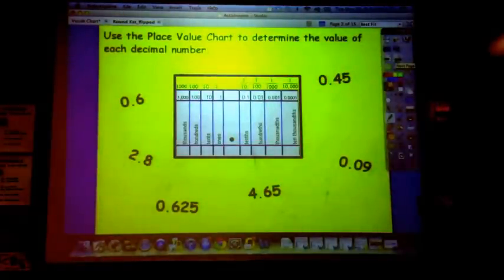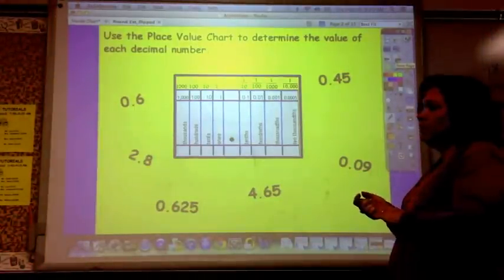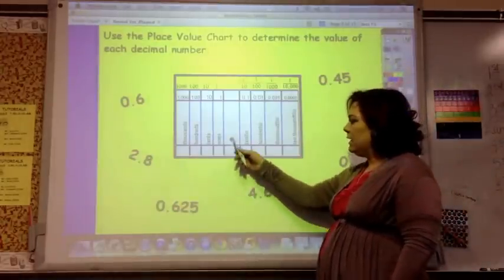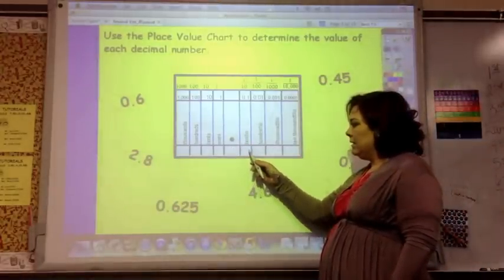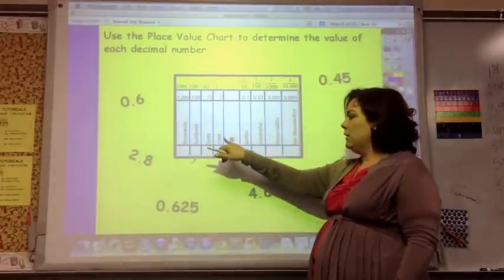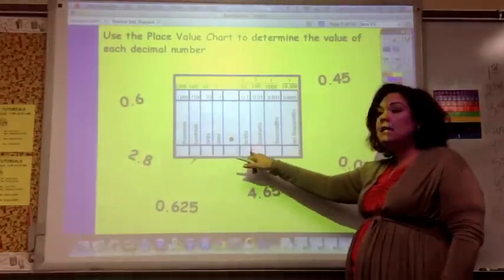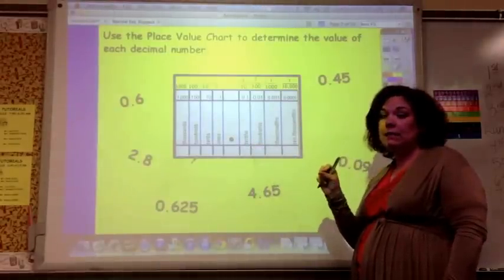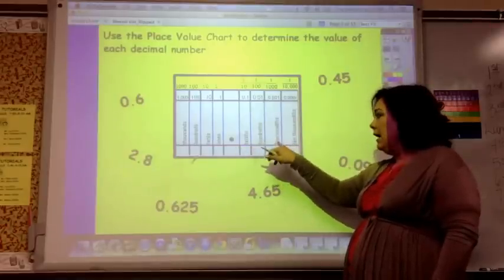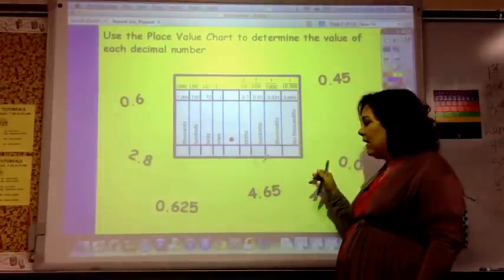When you're rounding or estimating, you need to use the place value chart to determine the value of each decimal number. Remember, here is the decimal point. This is less than a dollar, and this is more than a dollar. So this is like one dollar, ten dollars, one hundred dollars, one thousand dollars. And this is tenths, like in ten cents. Tenths, hundredths is in the pennies, and then thousandths, which we don't think of as in money, and ten thousandths.